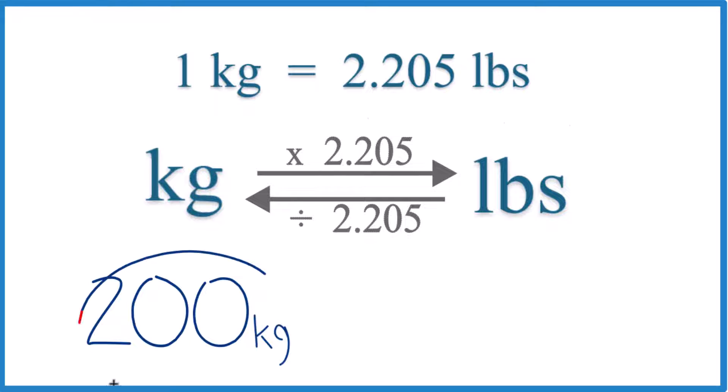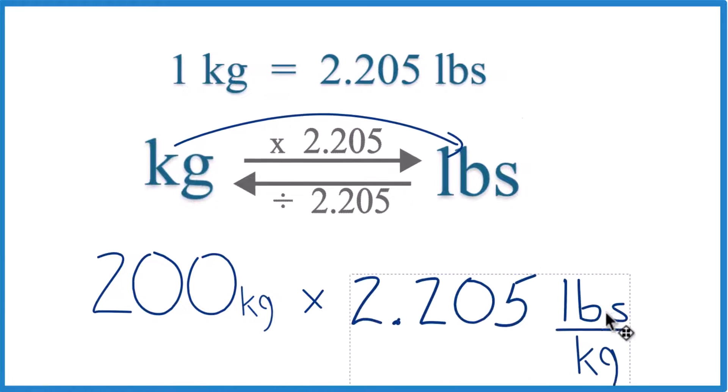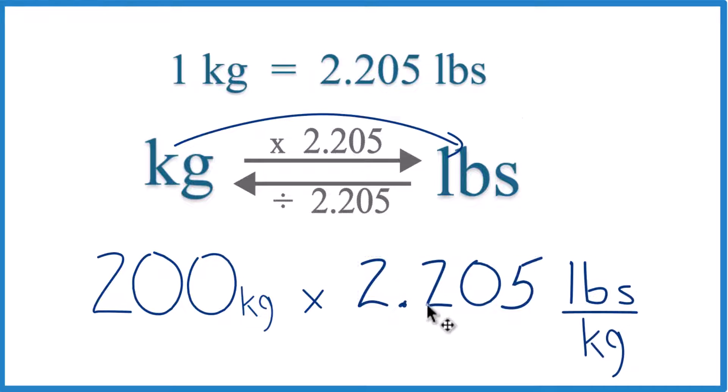So we've got 200 kilograms, and we're going from kilograms to pounds. So we're gonna multiply by that 2.205 conversion factor. And note that it's 2.205 pounds per kilogram. That comes right up from our conversion factor here.